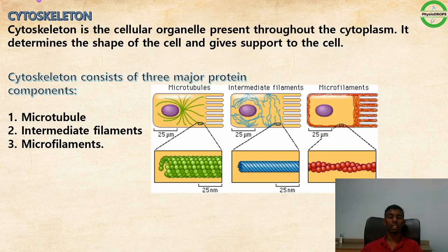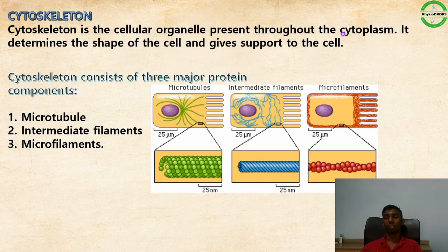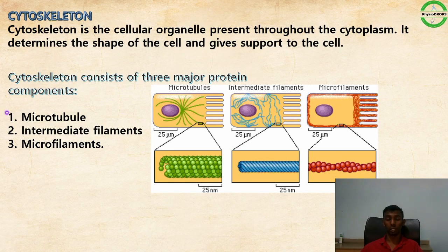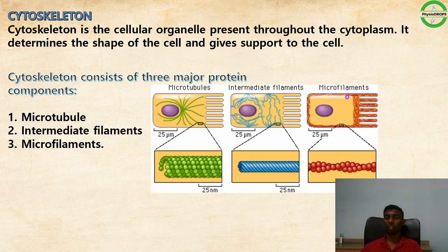The cytoskeleton is a cellular organelle present throughout the cytoplasm that determines the shape of the cell and gives it support. It is composed of three major protein components: microtubules, intermediate filaments, and microfilaments.